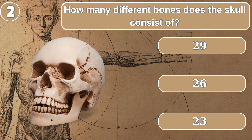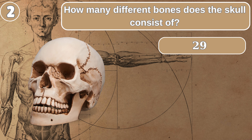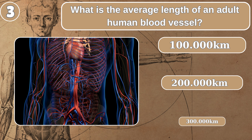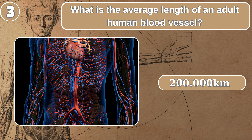How many different bones does the skull consist of? What is the average length of an adult human blood vessel? 200,000 kilometers.